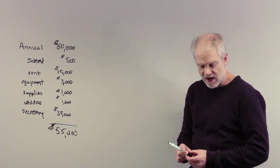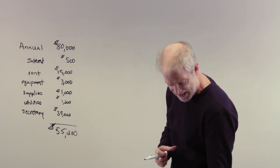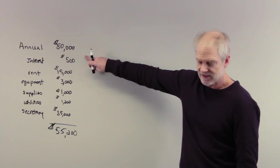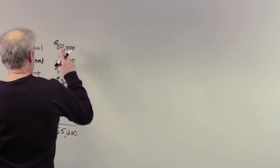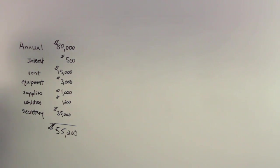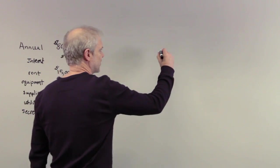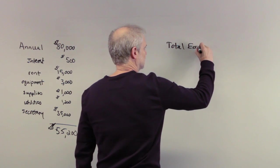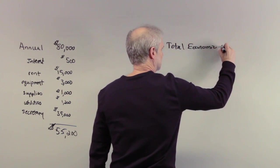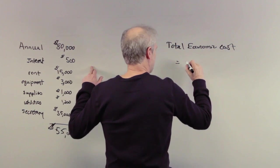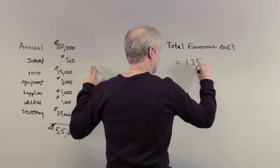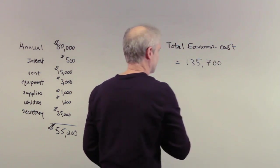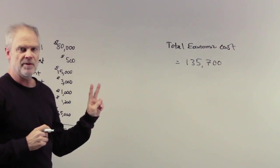But let me jump to number nine, because that's what I was just working towards. Ellie's annual economic costs will equal, I've got to put these in. So I'm going to add another $80,500 to that, and now for the economist, total cost, total economic cost, are equal to $135,700. That's the economic cost.